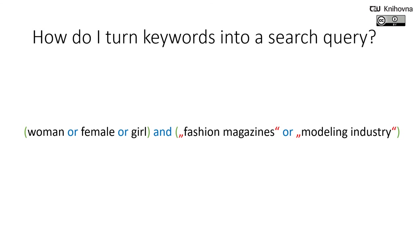Here we are back to our example. You can see I used Boolean operator AND and also Boolean operator OR. I also used quotation marks and brackets. If you want to find an exact phrase, use quotation marks, and brackets you can use to combine your search strings.